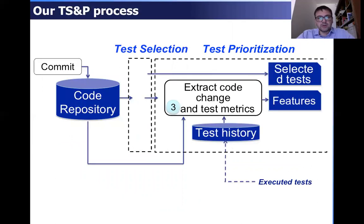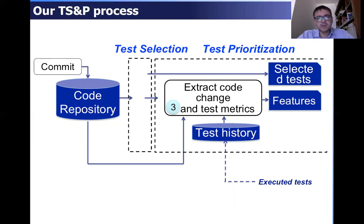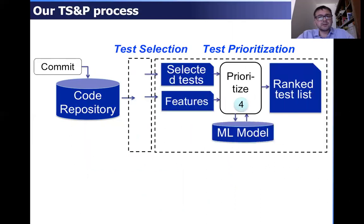To run machine learning-based prioritization algorithms, we characterize the tests with a set of features. These features are code change metrics extracted from the code repository and test metrics — metrics that represent the history of the tests in the past cycles. These are given to the prioritization algorithms and the output is the ranked test list to execute in that specific cycle.